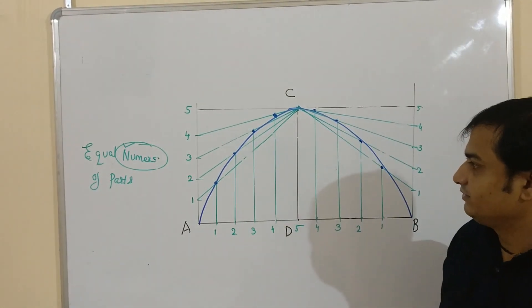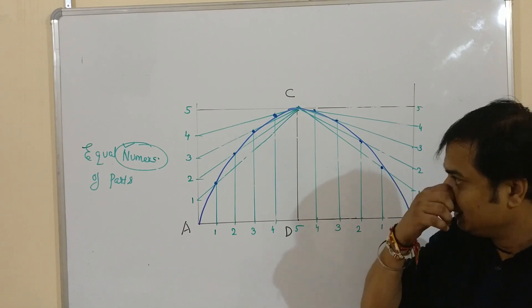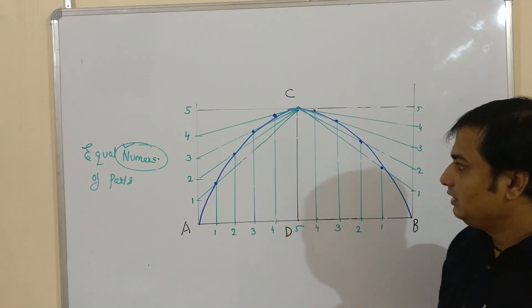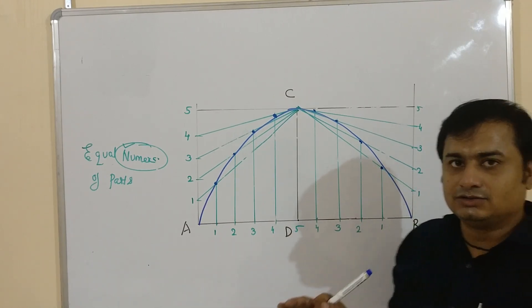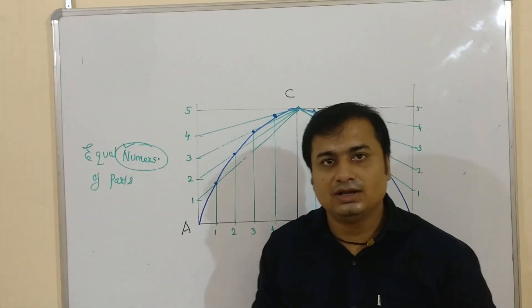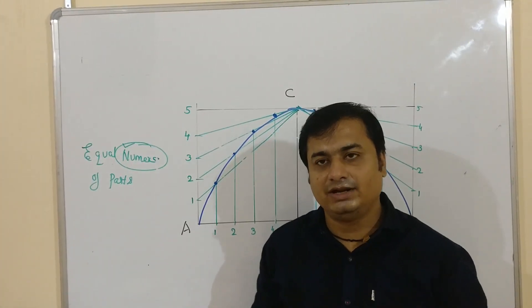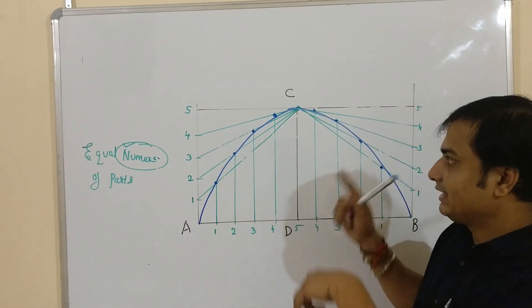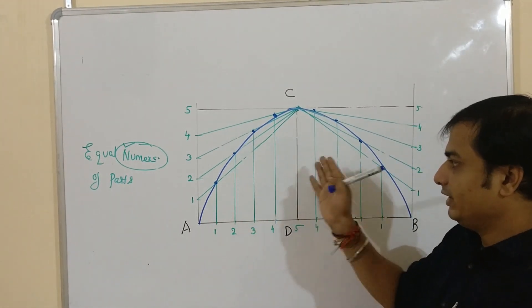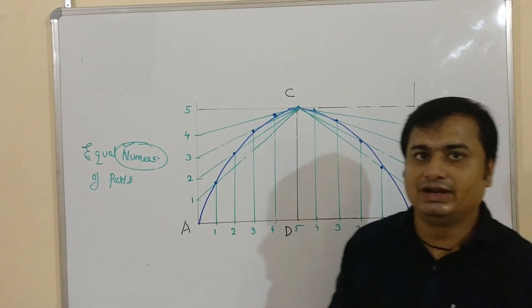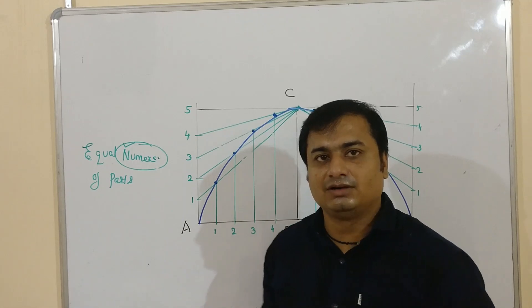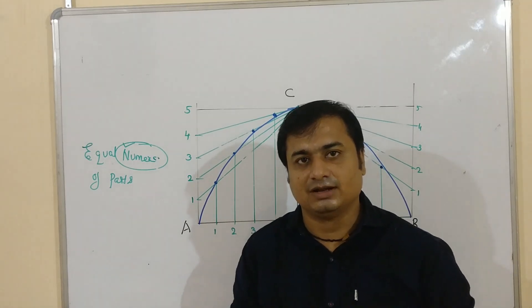This is the rectangle method to construct a parabola. In the final drawing, only the parabola curve should be drawn dark, while all construction lines — including the rectangle and the joining lines — should be kept very light.